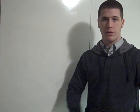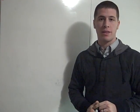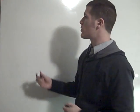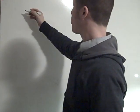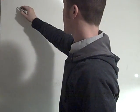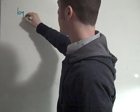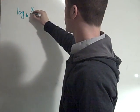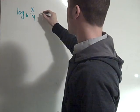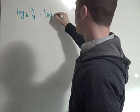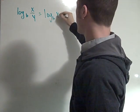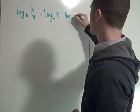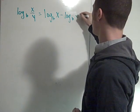Now I'll prove the other two properties of logarithms, namely the quotient property and the change of base formula. The third property of logarithms states that log base b of x divided by y is equal to the log base b of x minus the log base b of y.